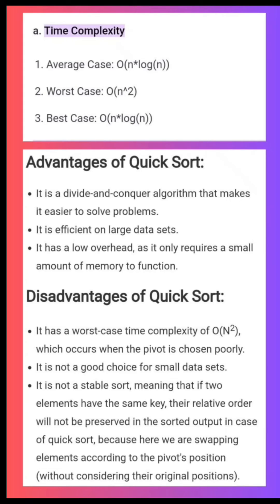As a disadvantage, the worst case time complexity is O(N²), which occurs when the pivot is chosen poorly.